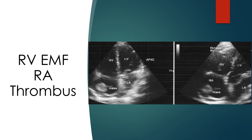Right ventricular apical fibrosis is evident in the right panel. In this case, the involvement of the right ventricular cavity is lesser than in the previous case, which has a documented history of over two decades.